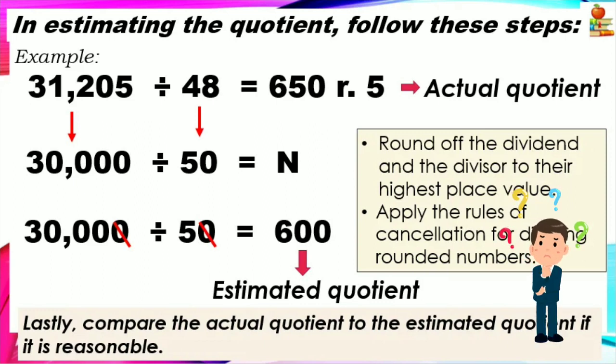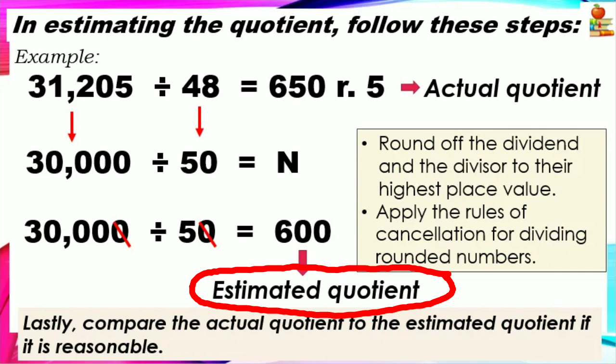Teacher, how do we do that again? First, round off the dividend and divisor. 31,205 becomes 30,000, and 48 becomes 50. Then apply the rules of cancellation — cancel the same number of zeros in the divisor and dividend. What remains is 3,000 divided by 5. The answer is 600. So our estimated quotient is 600.